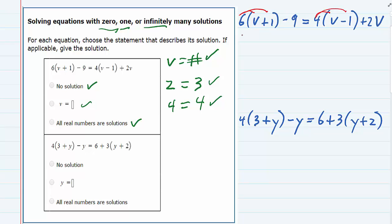The first one here will give me six times v, six v, six times one is six, minus nine equals, on the right hand side, four times v is four v,